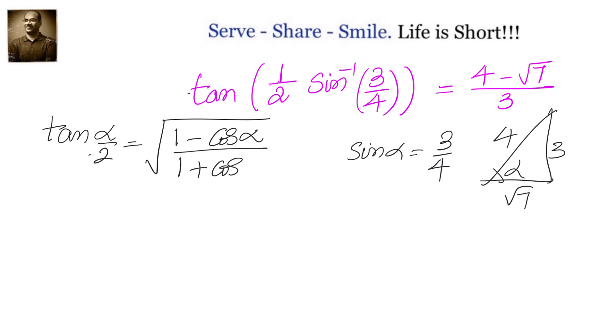Because one minus cos alpha is two sin squared alpha by two, and one plus cos alpha is two cos squared alpha by two. When you simplify and take the square root, you get tan alpha by two.